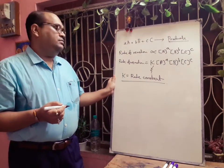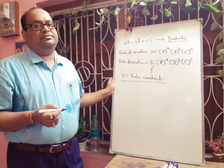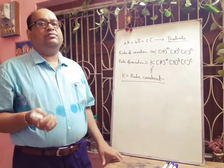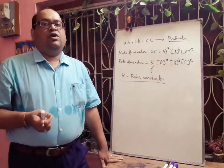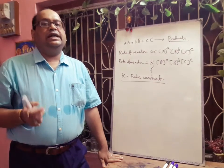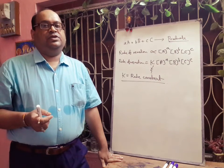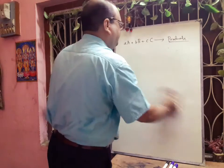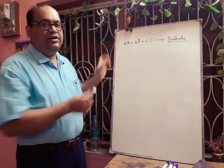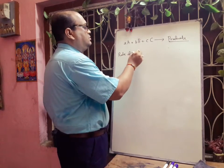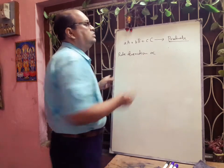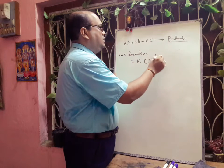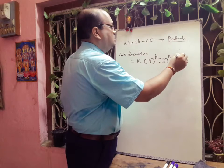Now we will write the rate law expression. The rate equation for a reaction is an algebraic equation showing how the rate of the reaction depends on the molar concentration of one or more reactants. It is important to note that the rate equation can only be determined experimentally. For the reaction aA plus bB plus cC equals product, rate equals K into [A]^p into [B]^q into [C]^r.